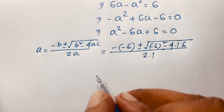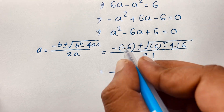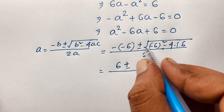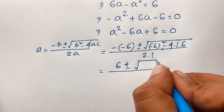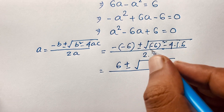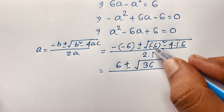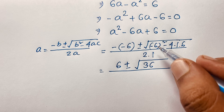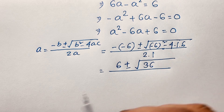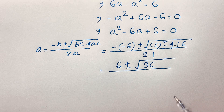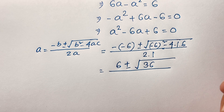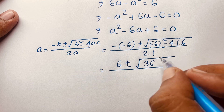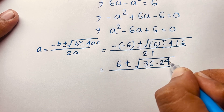You can see easily: negative of negative 6 is positive 6, and here is positive 6, plus or minus square root of 6 squared — 6 squared is 36. But here there is a minus, so minus 6 squared is still positive 36 because the exponent is an even number, the power is 2. So it is 4 times 6 equals 24, over 2.